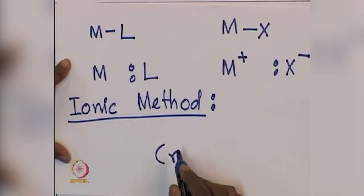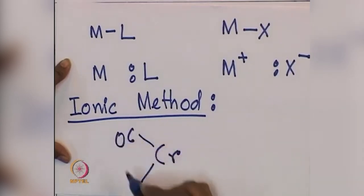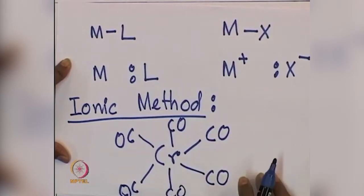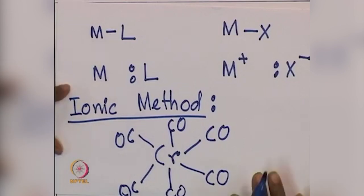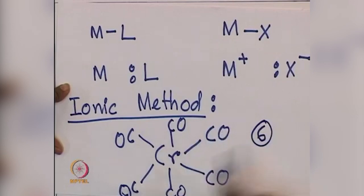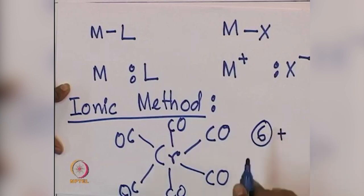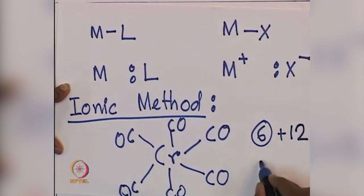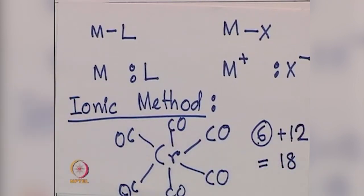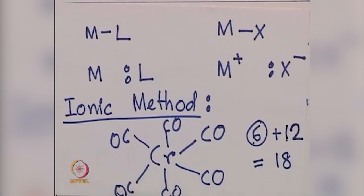For example, we have a chromium hexacarbonyl complex, which is an octahedral complex. Looking at the periodic table — scandium, titanium, vanadium, chromium — chromium has 6 electrons, and 6 carbon monoxides are present, each giving 2 electrons. So the total electron count is 6 plus 12, which equals 18. This is how we count the electrons: chromium hexacarbonyl has 6 electrons from chromium and 12 from the six CO ligands, totaling 18 electrons.